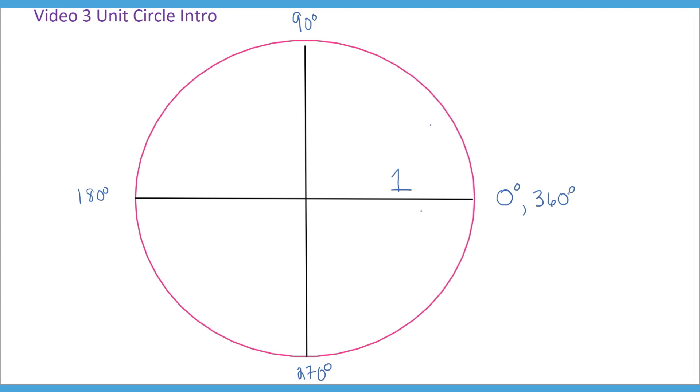And I have labeled these parts of the unit circle that actually cut the circle into quadrants. I've labeled them, and they have a special name, and they are called quadrantals. And they are very important because they do cut our unit circle into quadrants.